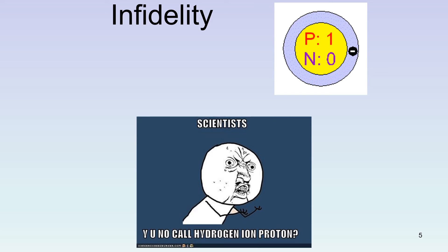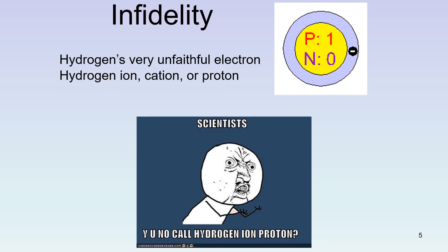Understanding electron infidelity is really important for reading the chapter and understanding cellular respiration. Think of what a hydrogen atom is: just one proton surrounded by one electron with no neutrons. Every other atom has more protons, so that one lonely electron is unfaithful — it's attracted to all other atoms or ions with more positive charges. Therefore, we refer to a hydrogen as a hydrogen ion, a hydrogen cation, or sometimes just a proton. If the electron leaves, all that's left is a nucleus with one proton — essentially a hydrogen cation.